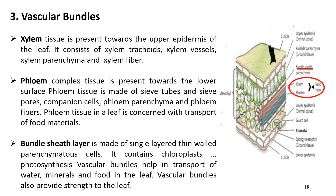Phloem tissue is present toward the lower epidermis surface of the leaf. Phloem tissue is made up of sieve tubes, sieve pores, companion cells, phloem parenchyma, and phloem fibers. Phloem tissue in a leaf is concerned with the transport of food material.